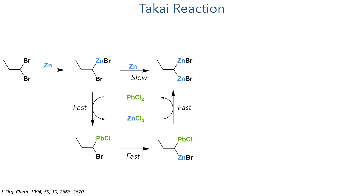Taking this forward, it was then reacted in a Takai olefination reaction. This reaction used zinc instead of the more common chromium, which first reacts with 1,1-dibromopropane. This undergoes oxidative addition into one of the carbon–bromine bonds. The second oxidative addition into the other carbon–bromine bond is quite slow; however, it can be catalysed by lead chloride. This first undergoes transmetallation with the zinc bromide group, and the bromine on this organo-lead compound undergoes rapid oxidative addition with the zinc present in the reaction mixture. This heterobimetallic compound once again undergoes transmetallation, forming the di-zinc bromide.